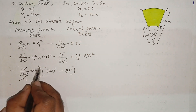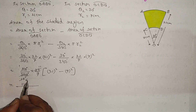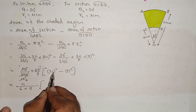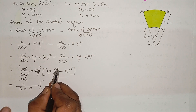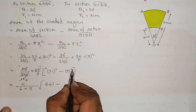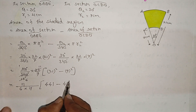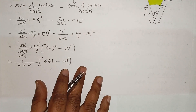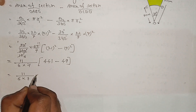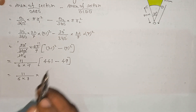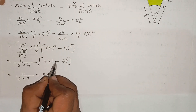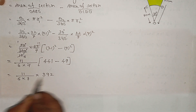The numerator is 11 divided by denominator 6 into 7. Then 21 squared is 21 into 21, which equals 441, minus 7 squared which is 49. Next step: simplify. 441 minus 49 equals 392.